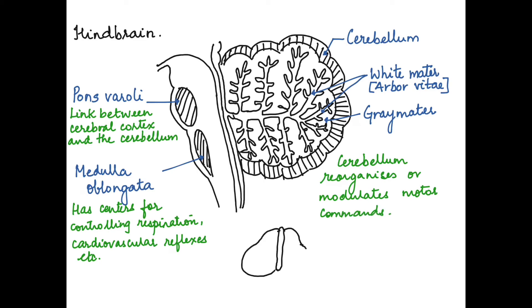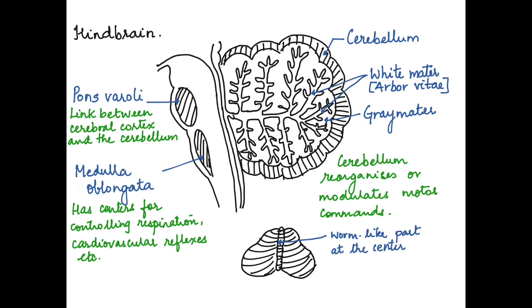Looking at the dorsal side of the brain, we can see two parts — the cerebellar hemispheres. In the center between the two cerebellar hemispheres, there is a worm-like structure, which is called the vermis.